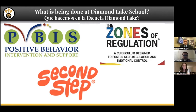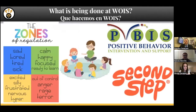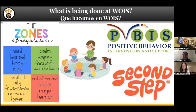Third grade has continued the Zones of Regulation, using the same vocabulary to have continuation from the primary school to the intermediate school. That picture breaks down what the different zones are and the different feelings associated with each one. We also incorporate PBIS at West Oak Intermediate and the use of morning meetings every morning to help build community. Con el grado de tercer grado, se trata de seguir enfocándose en las zonas de regulación, así para que se le haga un poquito más fácil el cambio de escuela.